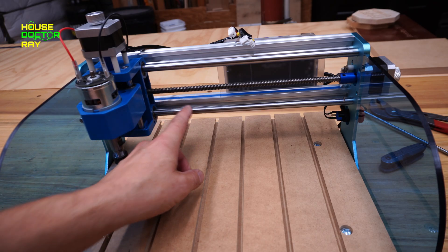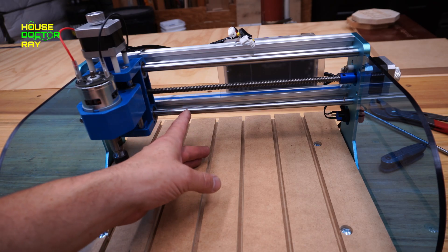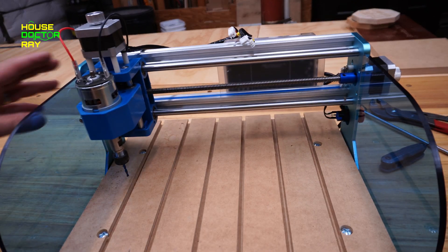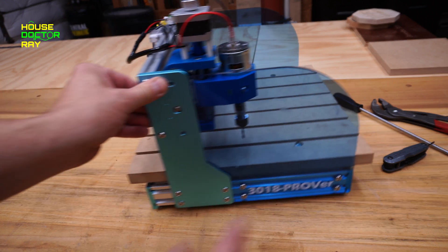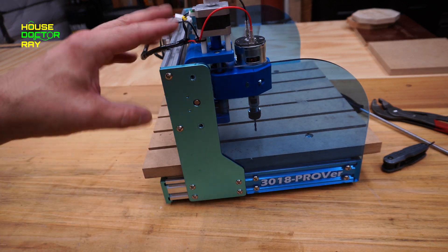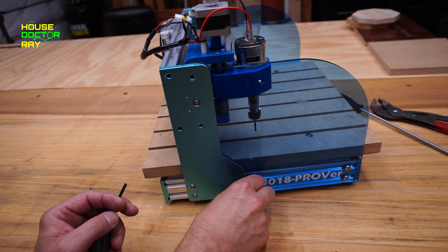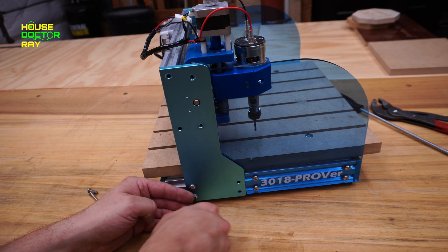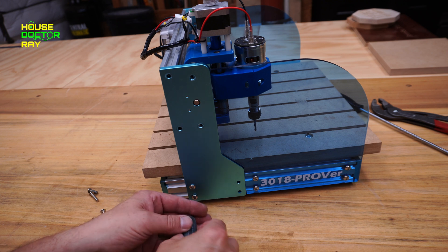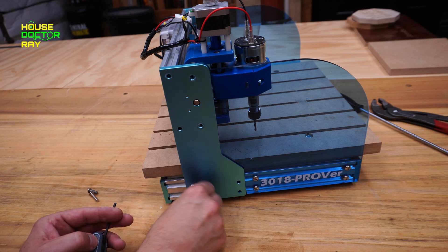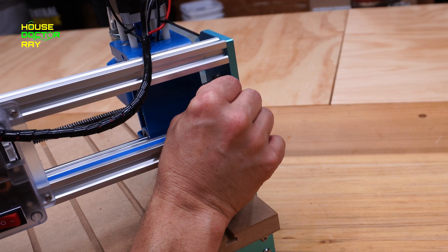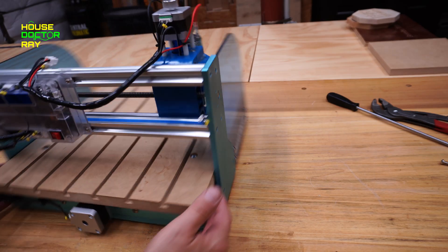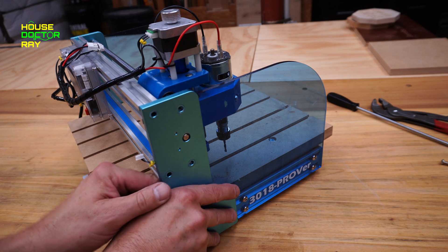These steel rods that the carriage slides back and forth on are captured in little pockets on these side brackets here, so I'm going to have to take this entire side off to be able to get the assembly off. And if your machine has limit switches, don't forget to disconnect that.